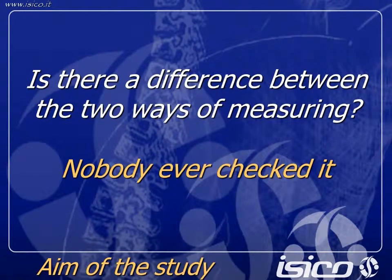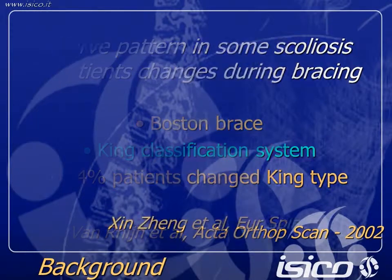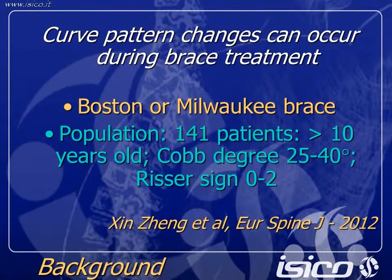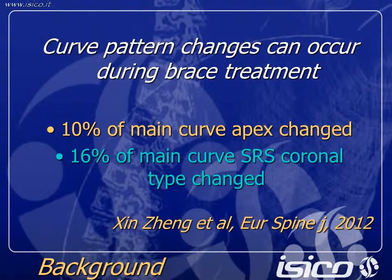Nobody ever checked if there is a difference between the two ways of measuring. In a study published by Barin in 2002, he verified if curve pattern can change in some scoliosis patients, and he verified that 14% of patients change King type. In a very recent study published by Zinzen, he verified if curve pattern can change during brace treatment with Boston or Milwaukee brace, and he verified that 10% of main curve patterns changed and 16% of main curve SRS coronal type changed.